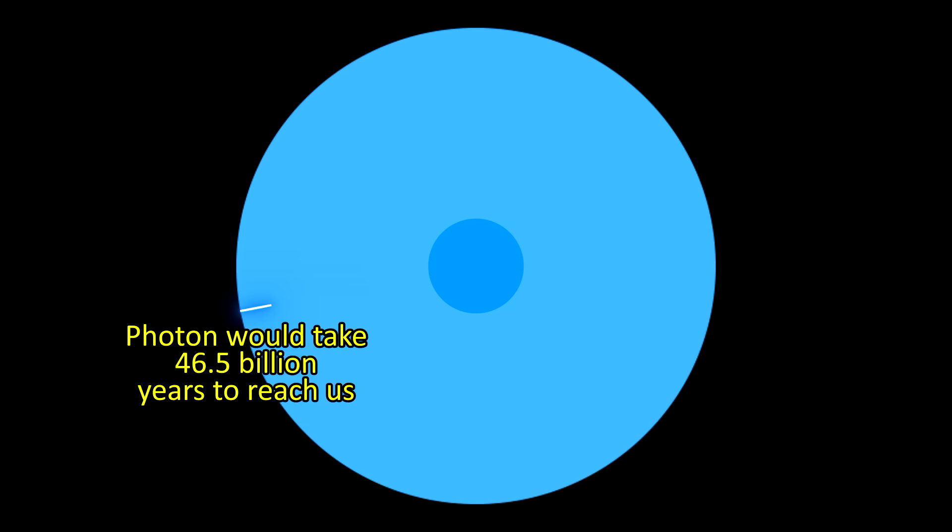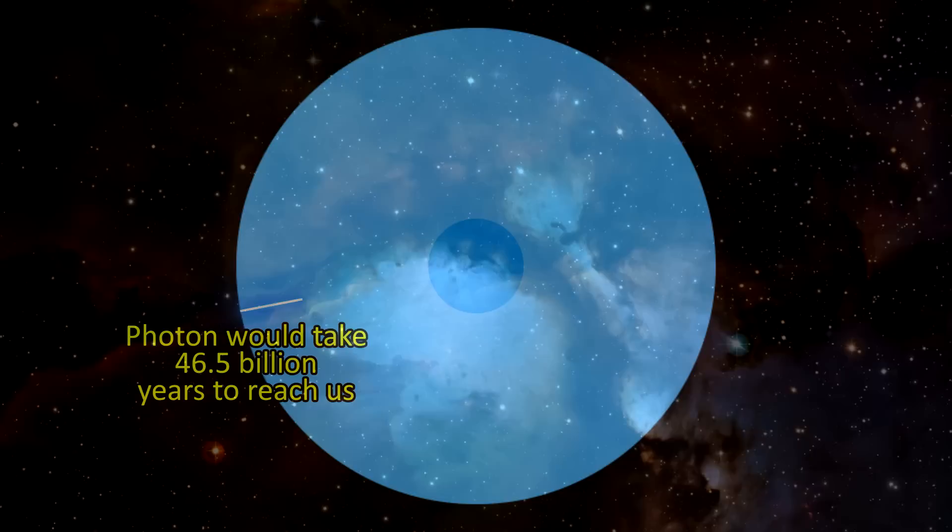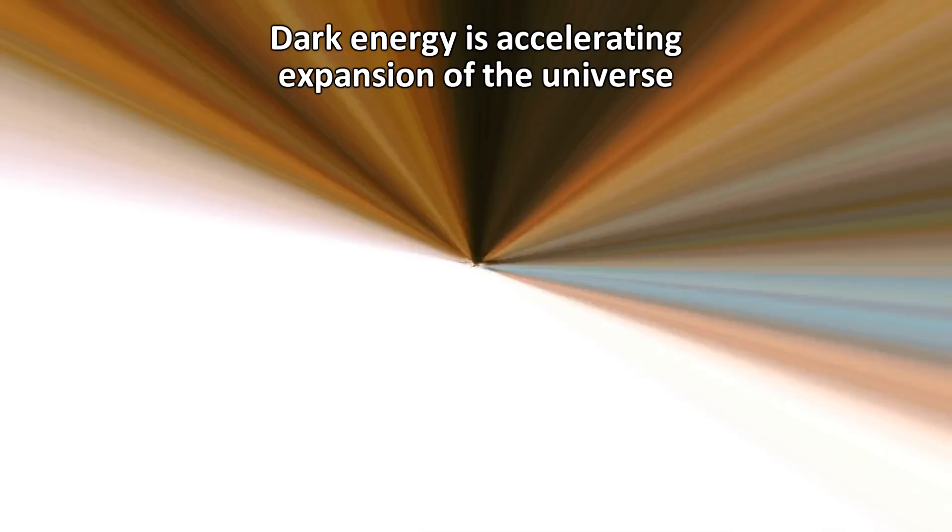But we will actually never eventually see this light, because in 1998, we discovered something called dark energy, and learned that the universe is not in a steady expansion, but rather an accelerating expansion, so that light will be receding from us at greater than the speed of light.